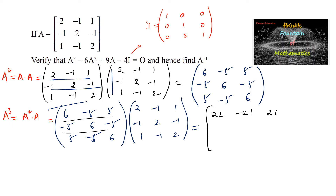Second row with second column: 5+12+5=22. Second row with third column: -5-6-10=-21. Third row with first column: 10+5+6=21. Third row with second column: -5-10-6=-21. Third row with third column: 5+5+12=22. So A³ = [22, -21, 21; -21, 22, -21; 21, -21, 22].